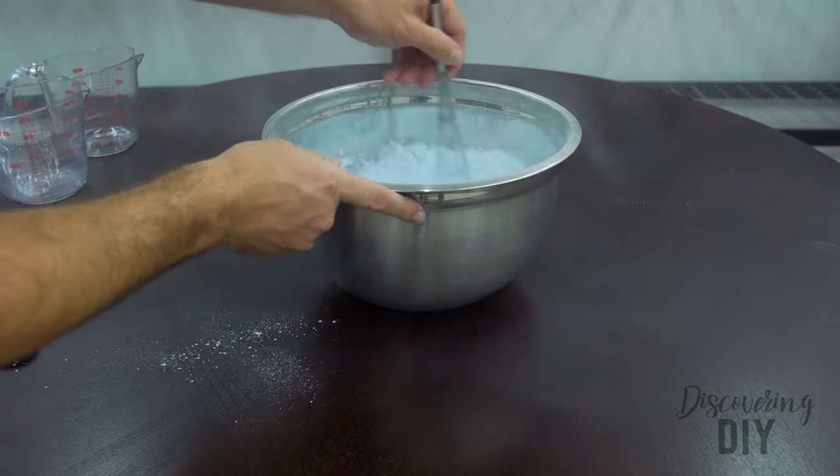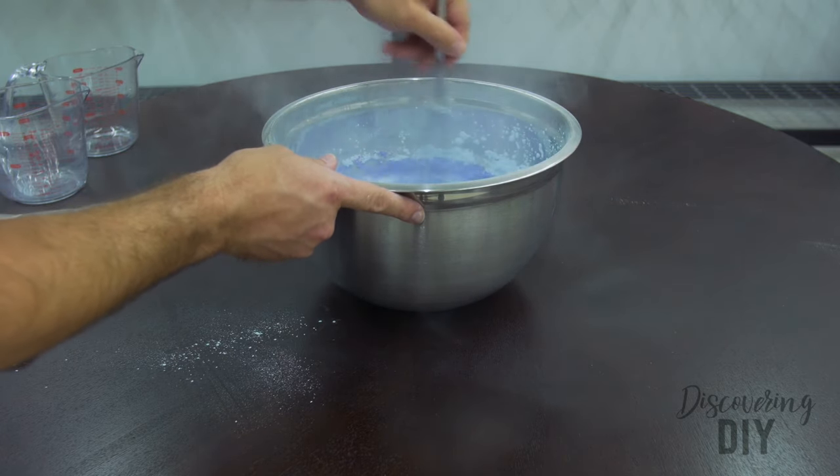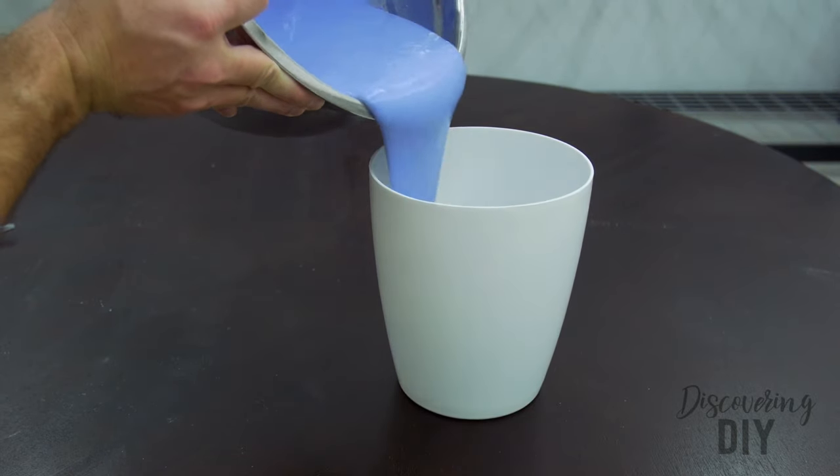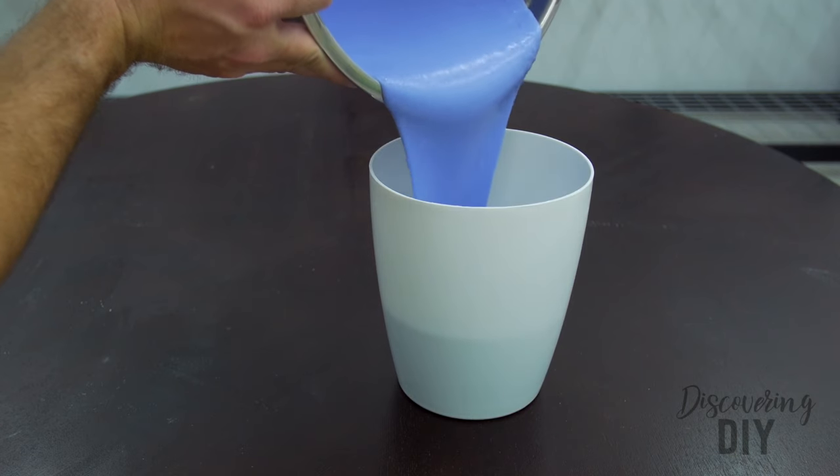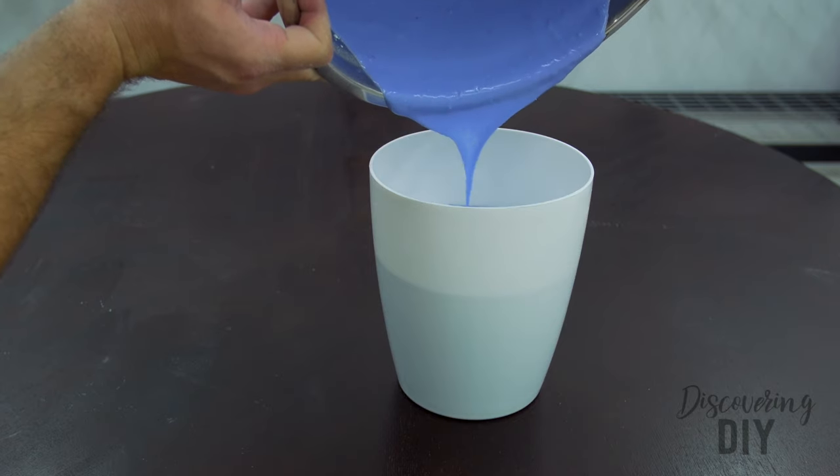Using a whisk or a spoon, thoroughly mix the molding powder and water for exactly three minutes. After mixing, immediately pour the molding mixture into the provided bucket and tap on the sides and the base of the bucket several times to minimize air bubbles.